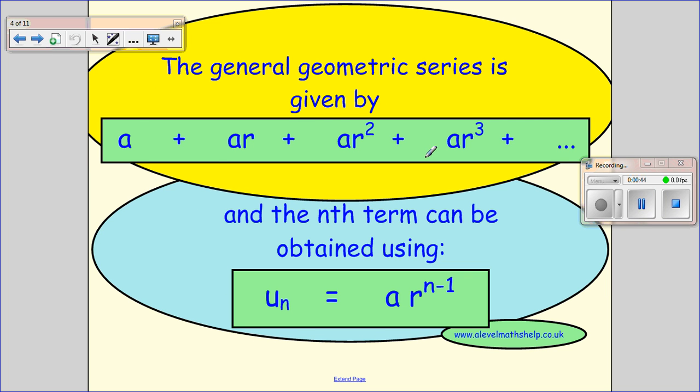Okay, so more generally we can write this like this. So a is the first term and then we multiply it by a constant ratio r to get the second term which we multiply by the constant ratio r to get the third term.